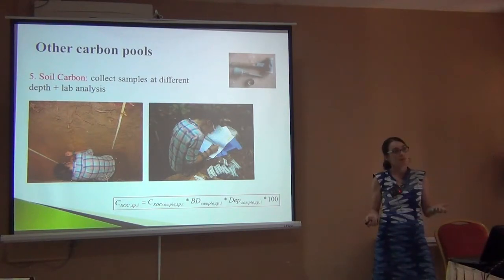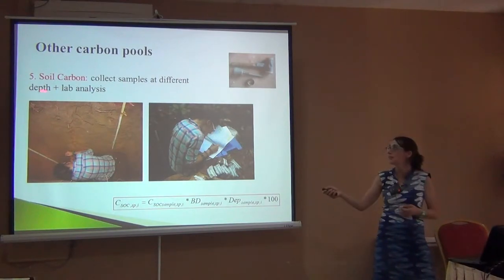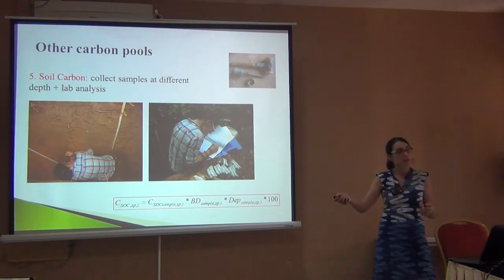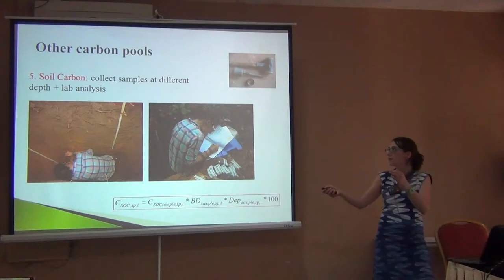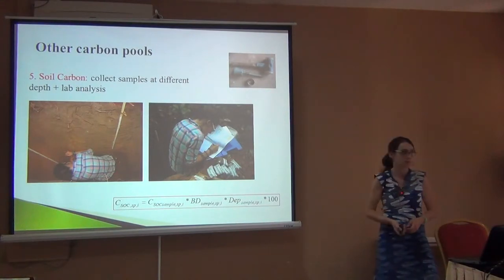Because as things get decomposed on the surface — where we have the litter, then the humus, then it mineralizes — they stay in the soil. So as you go deeper, you would have less carbon.